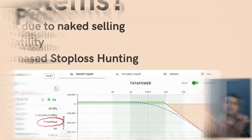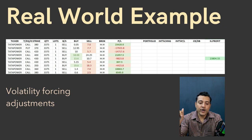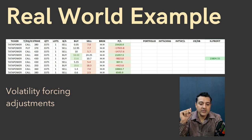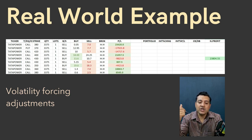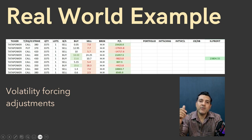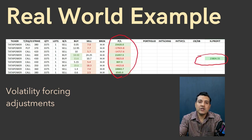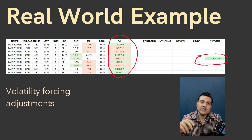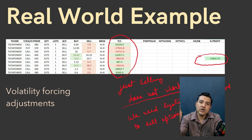Let me share a real-world example. Here is a trade of Tata Power that I did last month. I sold an option for Rs. 7 — a call of 380. After that, I sold a Tata Power 370 put, then calls of 420, 400, and 430 — all to save my position from making a loss. I made a profit of Rs. 23,000, but whereas my initial capital should have been Rs. 21,000, I ended up using Rs. 10,000 in unnecessary adjustments. Just selling without a method does not work in this market.